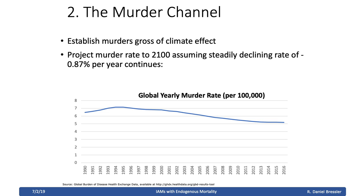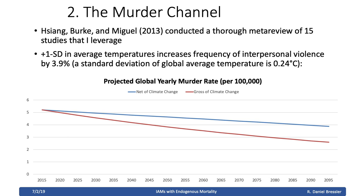For the murder channel, I first established the murder rate gross of the climate effect, projecting it to 2100 using Global Burden of Disease data — the yearly murder rate per 100,000 people has been going down slightly, and I project that continues. Then using the Hsiang, Burke, and Miguel meta-review, I apply their finding that for every standard deviation increase in average temperatures, there is a 3.9% increase in the rate of interpersonal violence, and project that onto the murder rate.